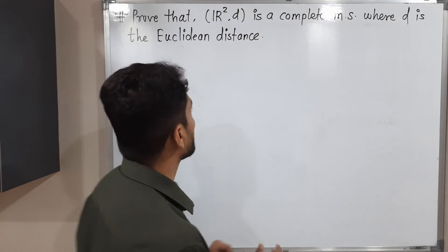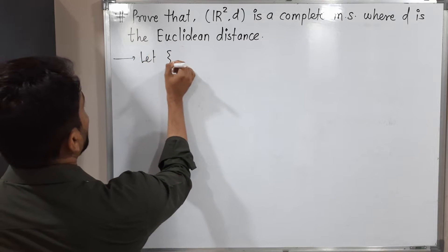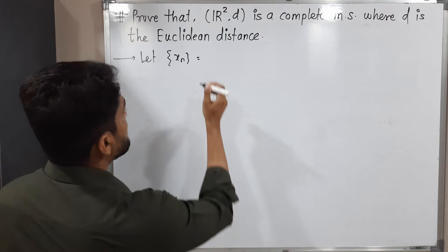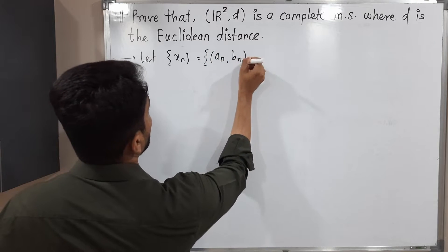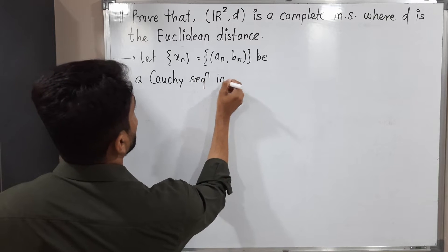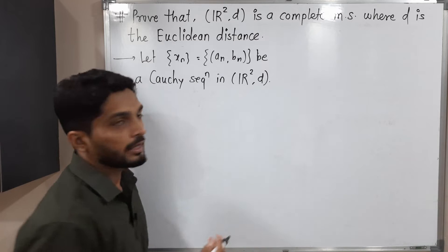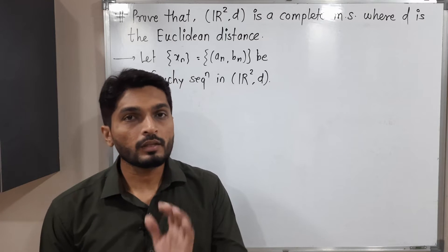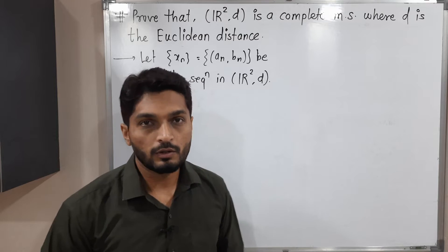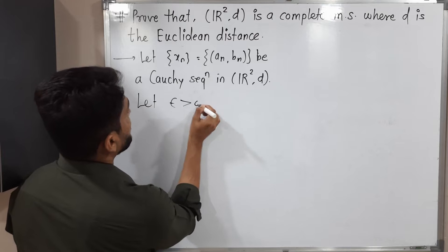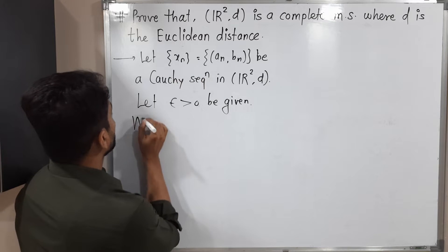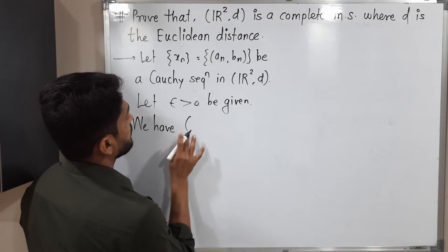Let us take any arbitrary Cauchy sequence and prove it is convergent. Let xₙ be a Cauchy sequence in ℝ². Since xₙ is in ℝ², it has two components, so xₙ = (aₙ, bₙ). Let ε > 0 be given. We will use the epsilon definition of Cauchy sequence and convergent sequence throughout.